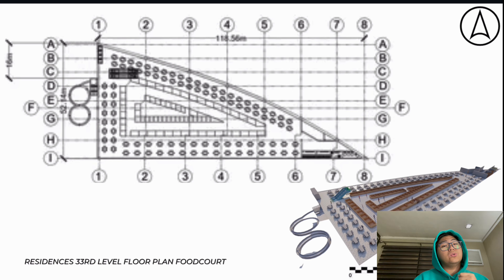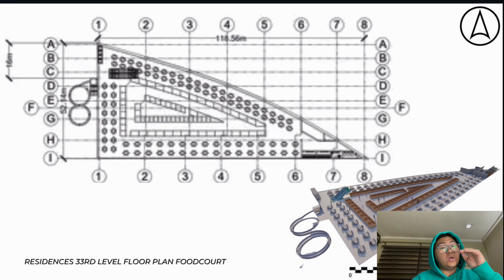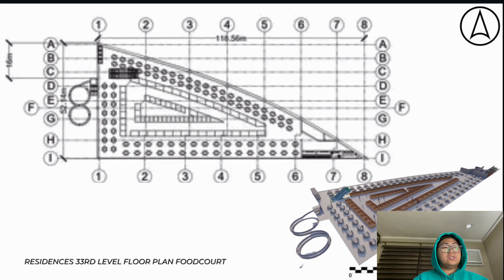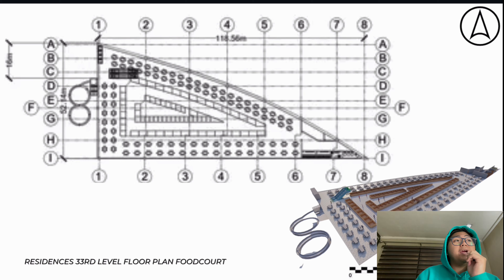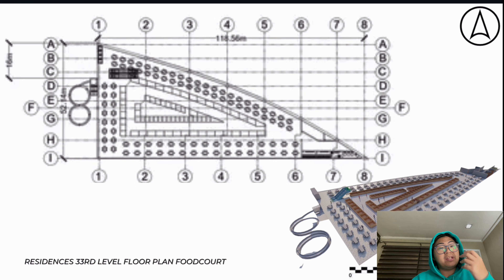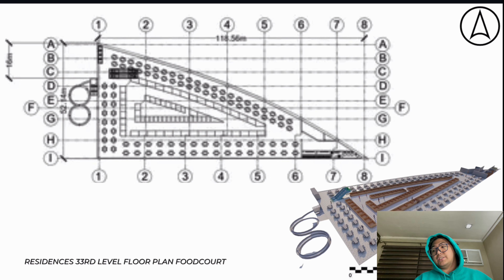We are now at the 33rd level. As stated earlier, we have the 5th level of Maslow's Hierarchy of Needs — physiological needs — so I've converted this into a food court. If we look on the right, we can see an isometric view of what it would look like. Starting from level 32, we have escalators, and each level also has elevators.